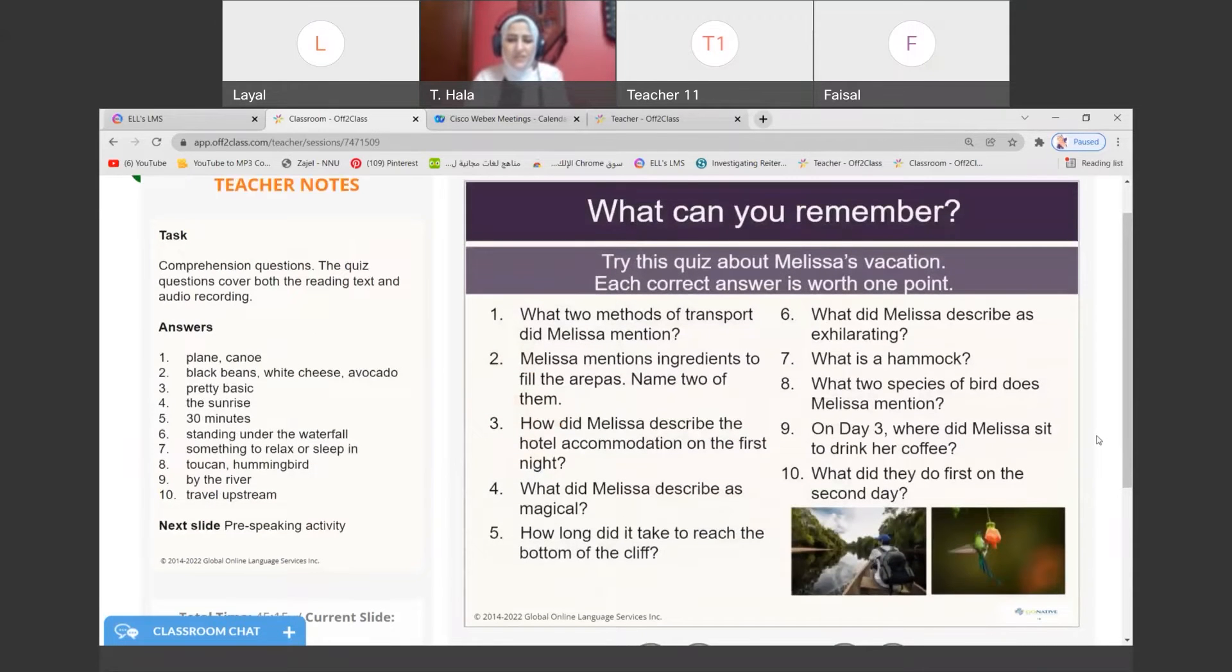Okay, clear. All right. Let me see if you remember the events of the story from the whole beginning. What can you remember? Let's start with you, Faisal. What two methods of transport did Melissa mention? Methods, mention - ذكرت.